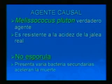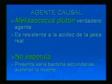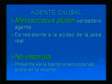Terminamos con loca americana y pasamos a loca europea, que es la otra enfermedad que se encuentra muy comúnmente dentro de las colmenas. La produce el Melissococcus plutonius, que es el verdadero agente, resistente a la jalea real, con la particularidad de que no esporula, por lo cual las infecciones se van manteniendo dentro de la colmena pero no se guardan esporas por muchos años. La presencia de bacterias secundarias acelera la muerte de las larvas.